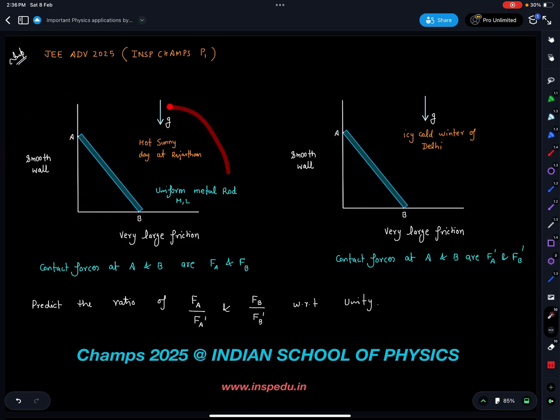In scenario 1, it is placed at a hot sunny day at Rajasthan. That means the temperature here is more. The same setup I'm taking to icy cold winter of Delhi. That means the temperature here is less.